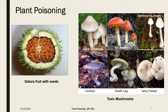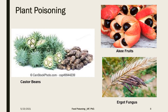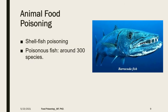Plant food poisoning involves consumption of poisonous plants such as poisonous mushrooms, datura seeds, datura fruit with seeds, castor beans, and some other fruits and fungi. Animal food poisoning includes consumption of poisonous creatures such as fish — there are around 300 species of poisonous fish around the world.